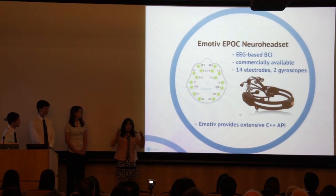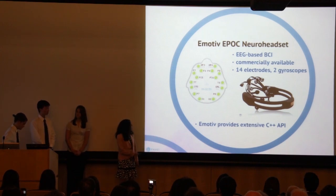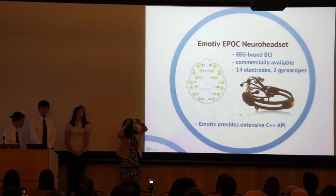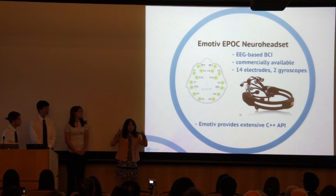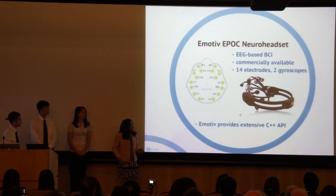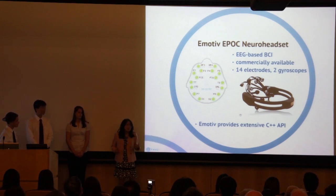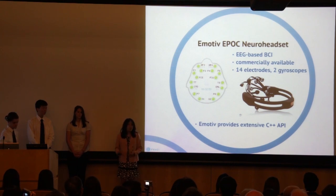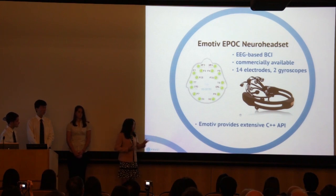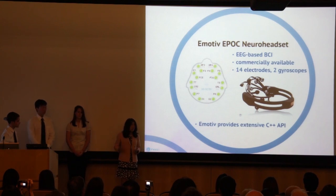It consists of 14 electrodes to measure the activity, and it has two gyroscopes to basically measure the orientation of your head, which could also be used to control a video game. Emotive provides an extensive C++ library, so it's really easy to program. Developers without a headset can actually develop for the headset, which is a really nice functionality. This API also allows you to train the headset — it needs to know which patterns correspond to what intention, and you can do that with the API.